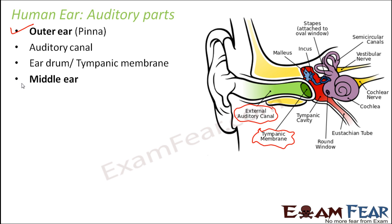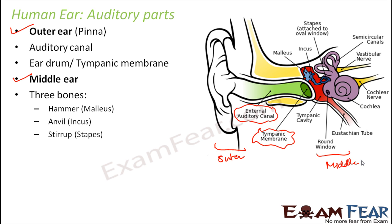Beyond the eardrum starts the middle ear, shown here as the red-colored structure. The middle ear consists of three bones: malleus, incus, and stapes. These three bones together form the middle ear, and as you can see, the middle ear is bony in nature.